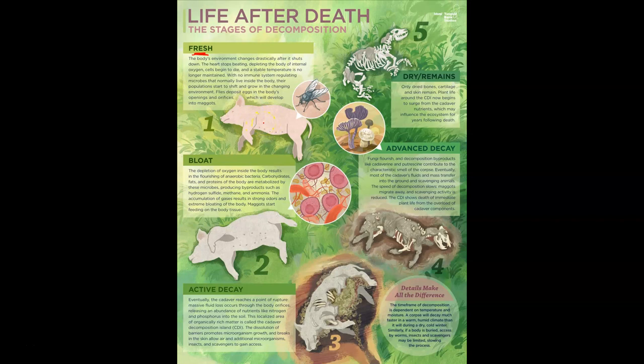While all of those things are happening inside the body, flies will immediately find a dead body and will start laying eggs in the openings or orifices of the body — like the ears, eyes, nose, mouth, etc. So there is a lot of microbial activity happening inside the body, bacteria proliferating and increasing in large numbers, and there's also flies laying eggs in the openings on the exterior.